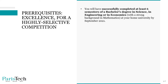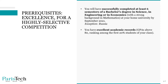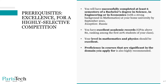When you apply, you should have successfully completed at least six semesters of a bachelor's degree in science, engineering, or economics with a strong background in mathematics — in the case of economics — at your home university by September 2021. There is an exception for Russia. You should have excellent academic records; we usually recommend GPAs above 80, ranking among the first 20 students of your class. Your level in mathematics and physics should be excellent. We also highly recommend proficiency in courses significant to the domain you apply for, such as chemistry or life sciences. You should of course have good command of written and spoken English.